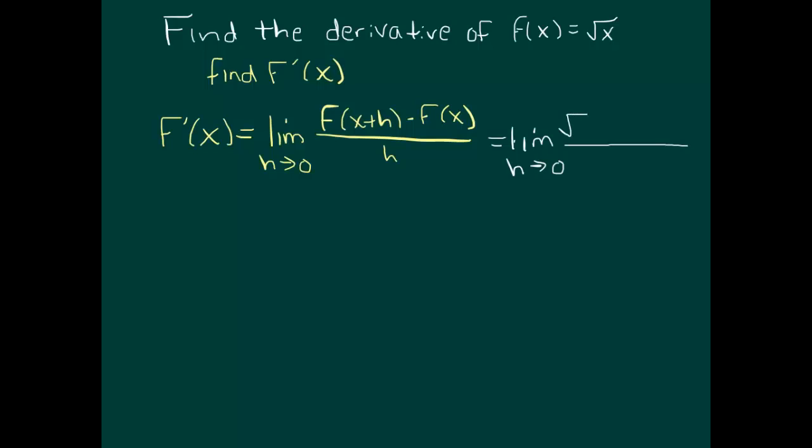So square root of x plus h is this expression here in our problem, square root of x plus h, minus f of x, and f of x is just the square root of x. And all that, of course, is divided by your h.